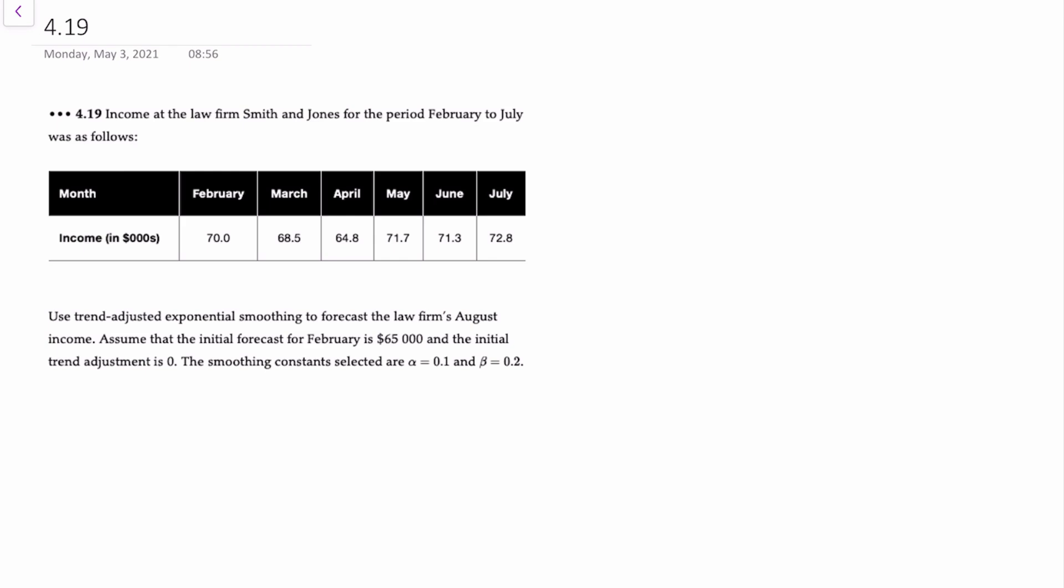The scope of our problem is this: we have a law firm that has provided six periods of historical data from March through July, and we're asked to use trend-adjusted exponential smoothing to forecast August's income. The initial forecast for February is $65,000, and the initial trend adjustment is zero. We're instructed to apply smoothing constants of 0.1 for alpha and 0.2 for beta.